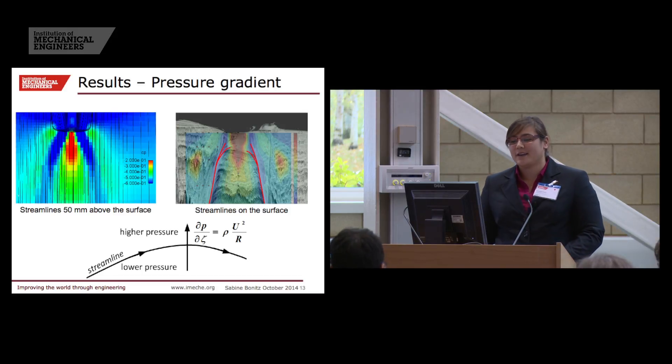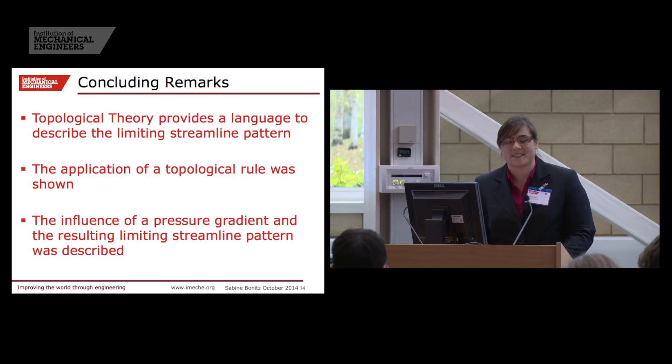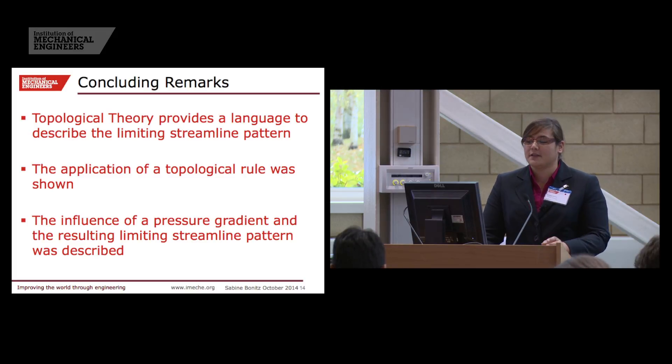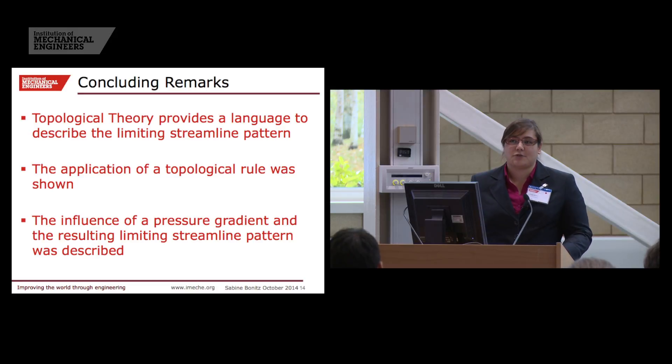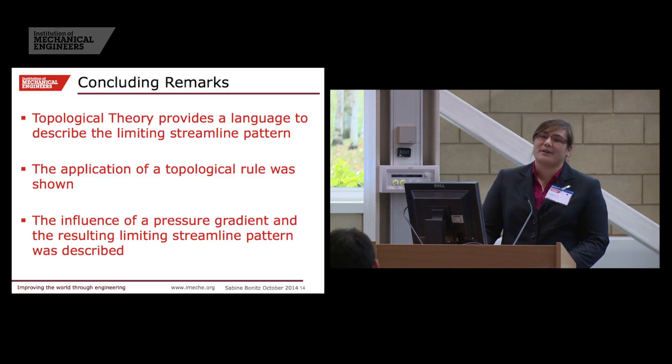I would like to come to some conclusions or summary what I talked about. I wanted to show that topological theory and the critical points can be a good language to describe the limiting streamline pattern on vehicles. I showed how the application of a topological rule was used. And I wanted to describe what the influence of a pressure gradient, what the pressure gradient has, what influence the pressure gradient has on the limiting streamline pattern of the car, especially close to the surface.